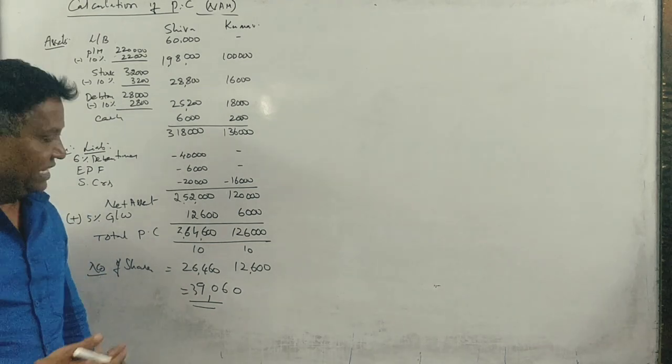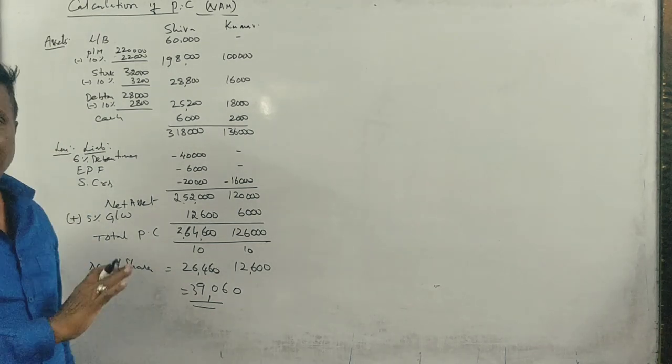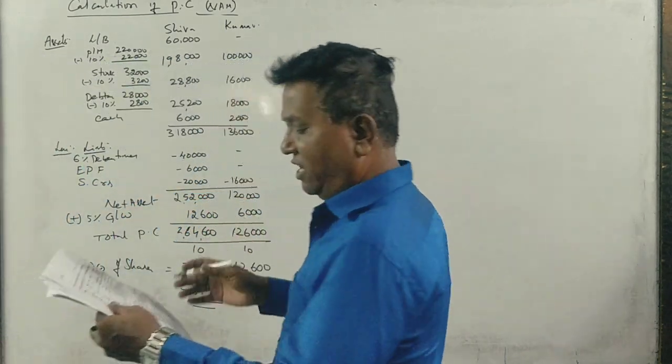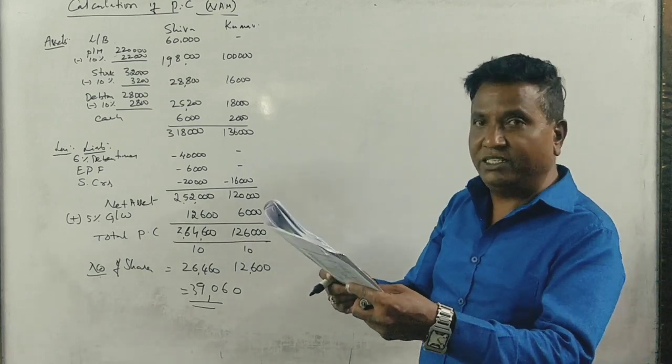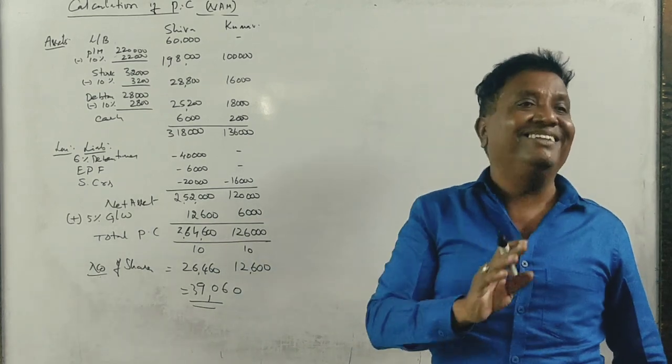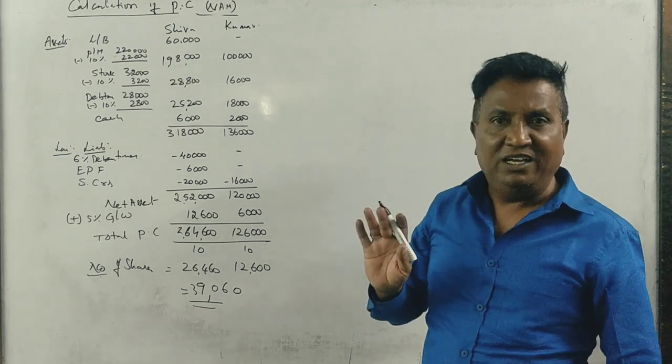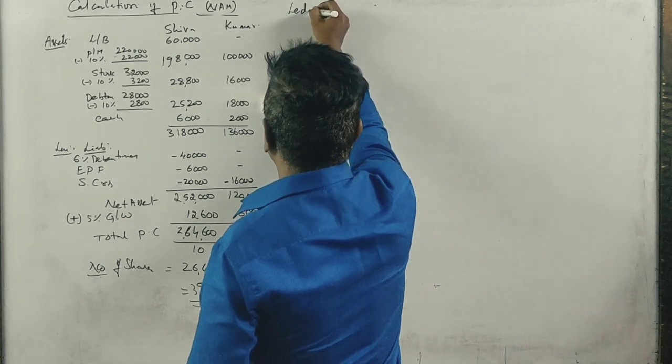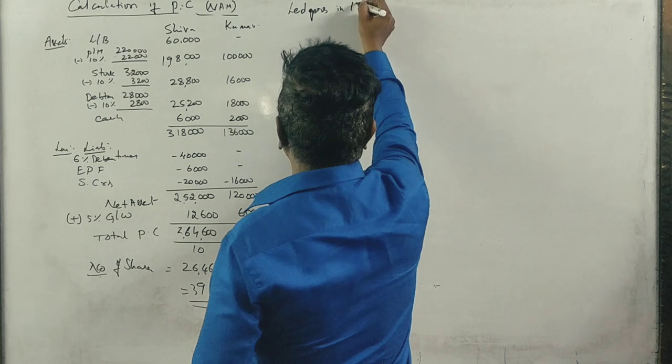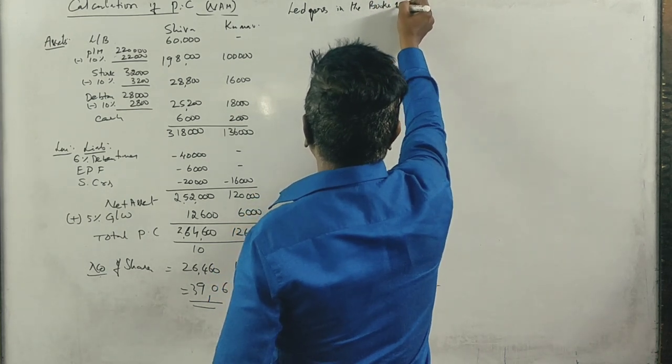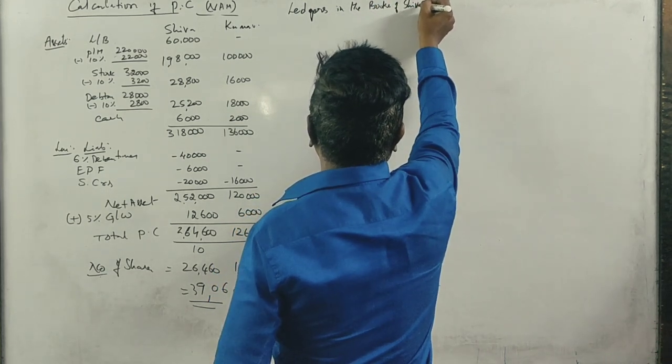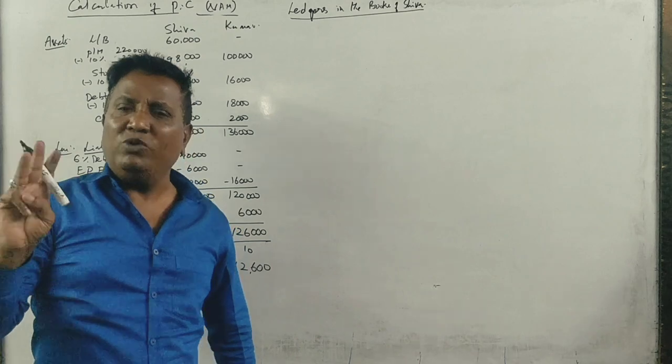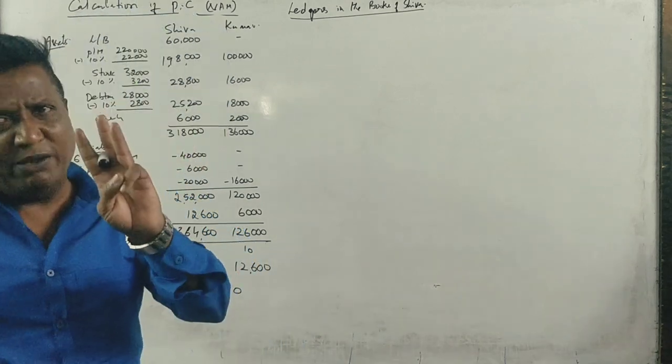Okay, I'll get PC calculation. Now prepare necessary ledgers of only Shiva company. The ledgers in the books of Shiva company. Shiva company now, which ledger should we prepare?